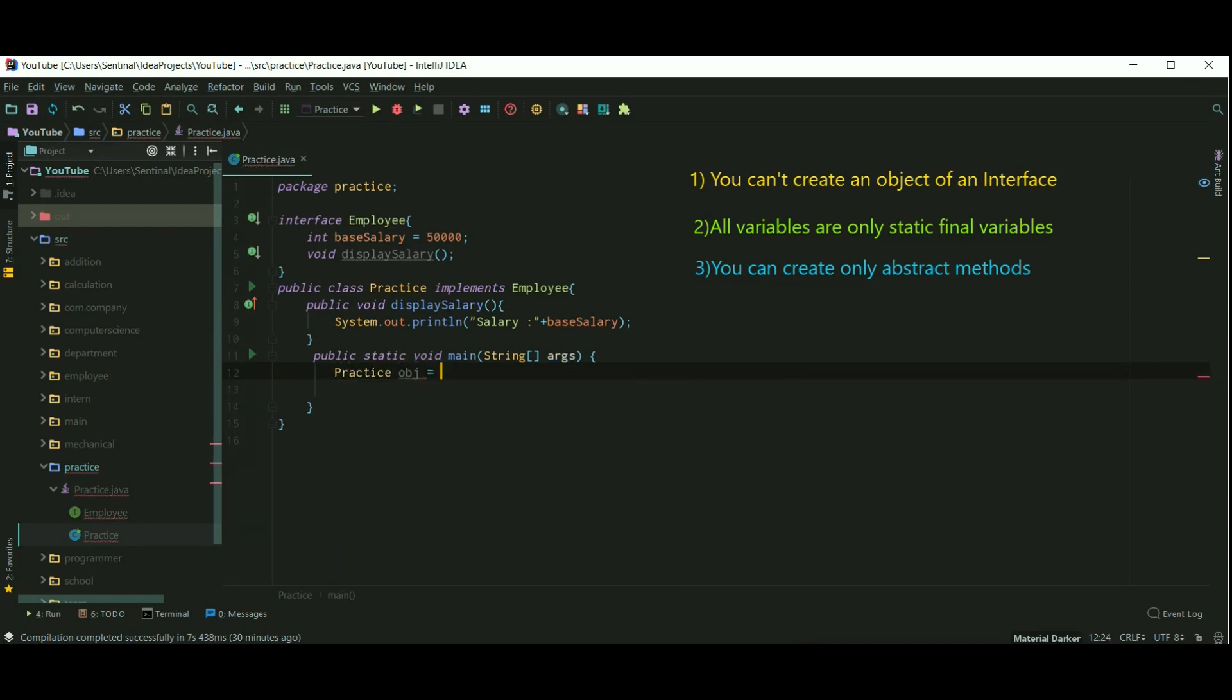Let's create an object of class Practice and call our display salary method.